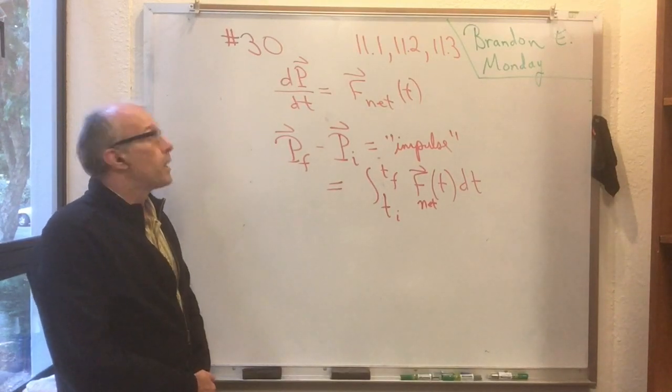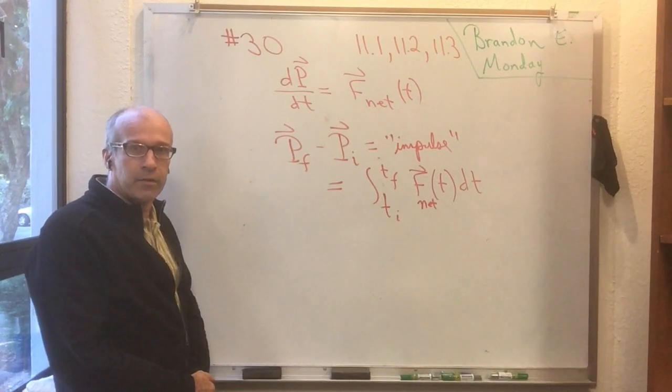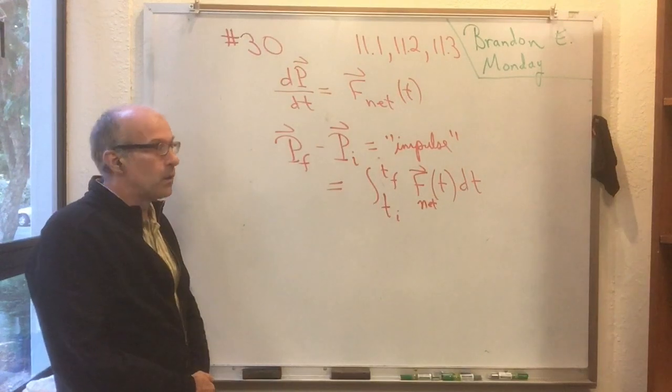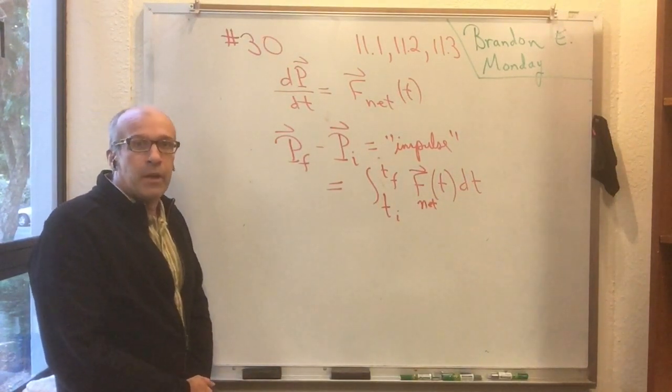This is flipped mini lecture number 30, covering the things I didn't cover in 11.1 and 11.2, which is basically the concept of impulse, and adding the concepts from 11.3.